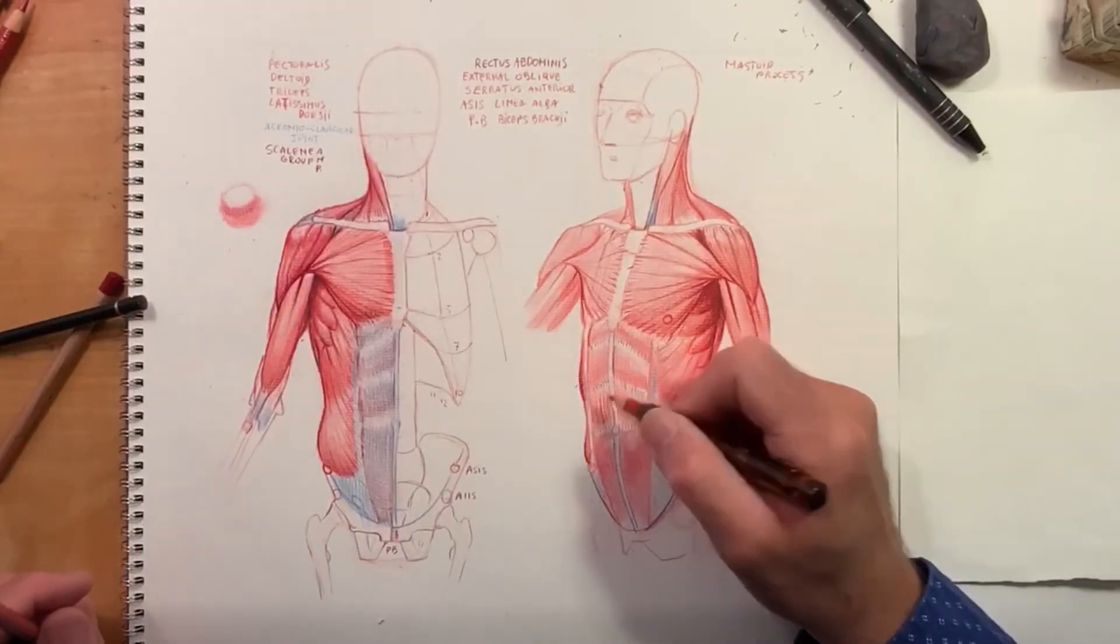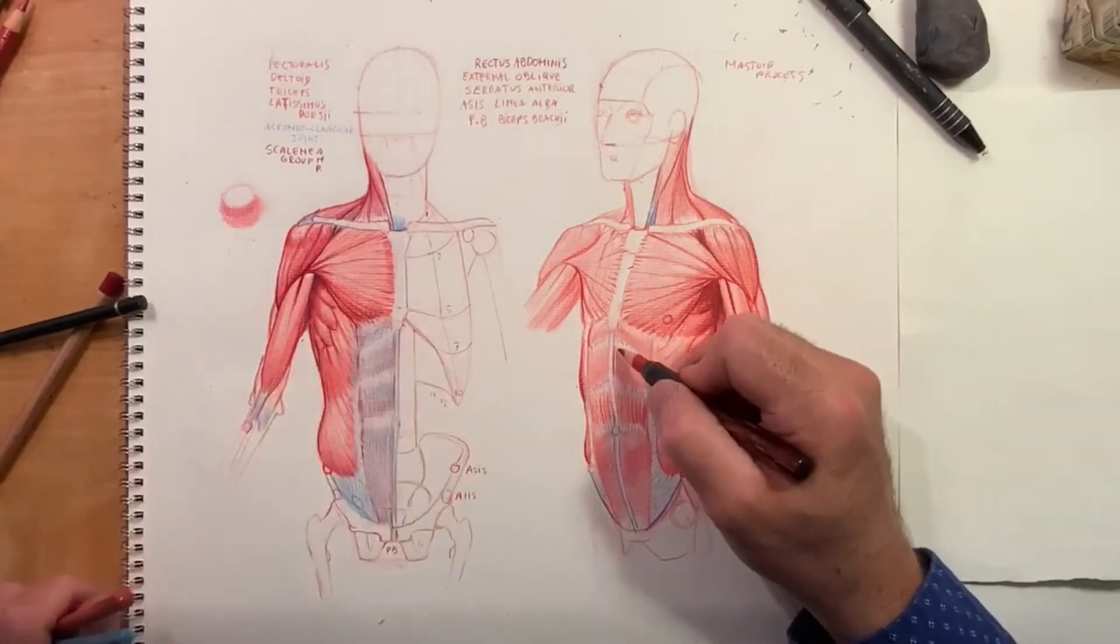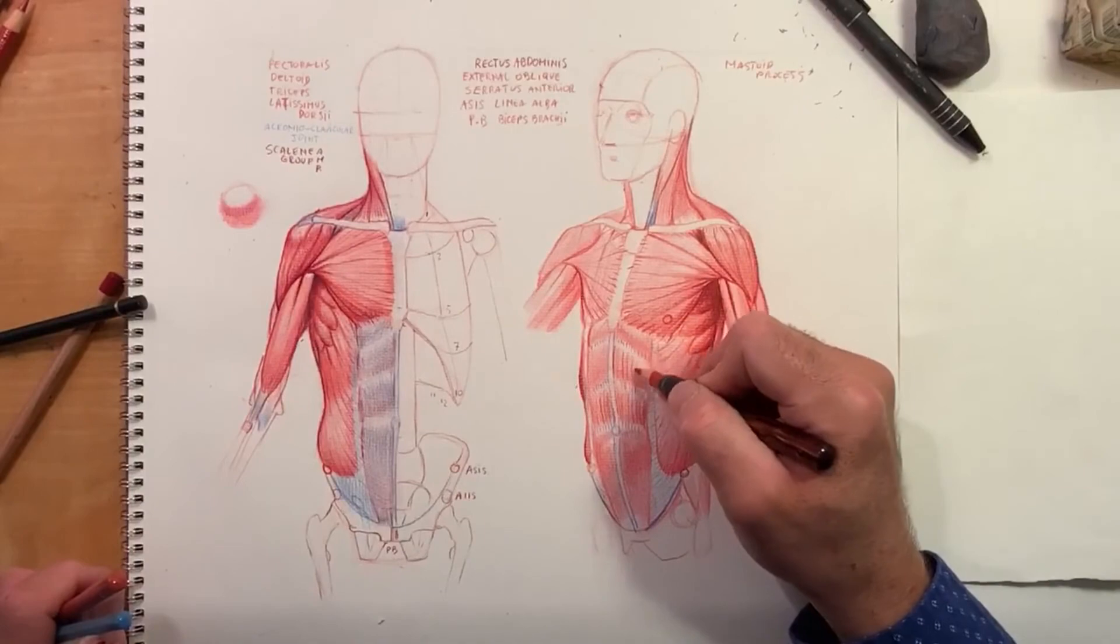Eventually you can try to draw from imagination a view of the body from complicated angles, contorted, twisted, et cetera. But you've got to start from this.